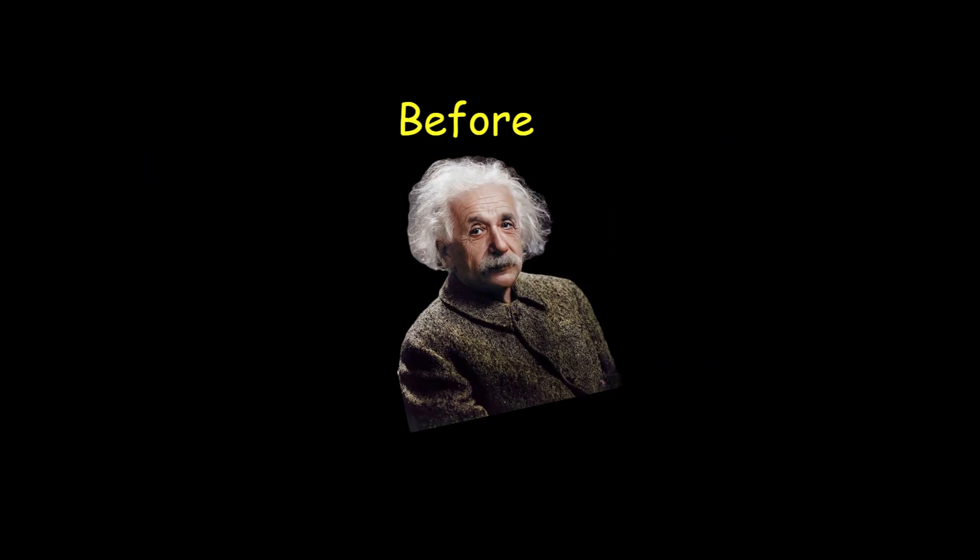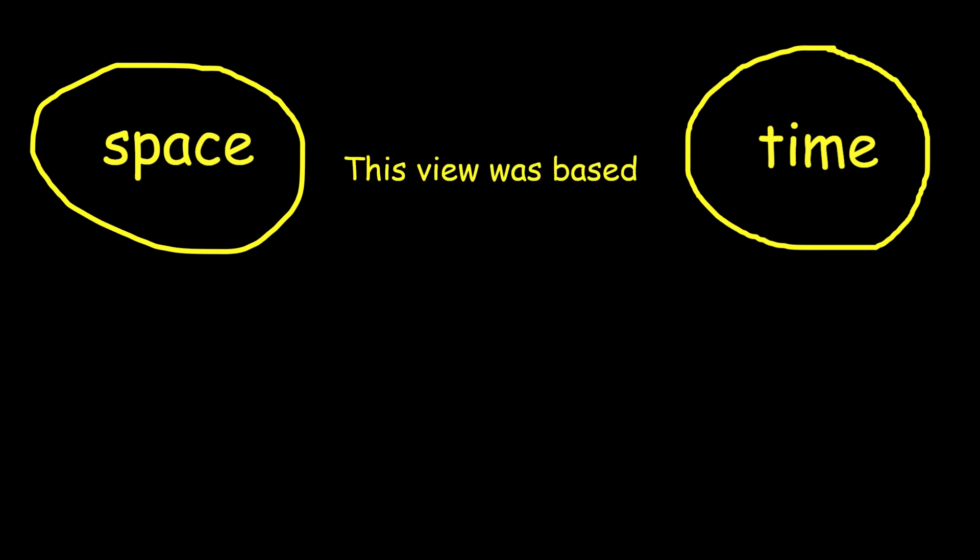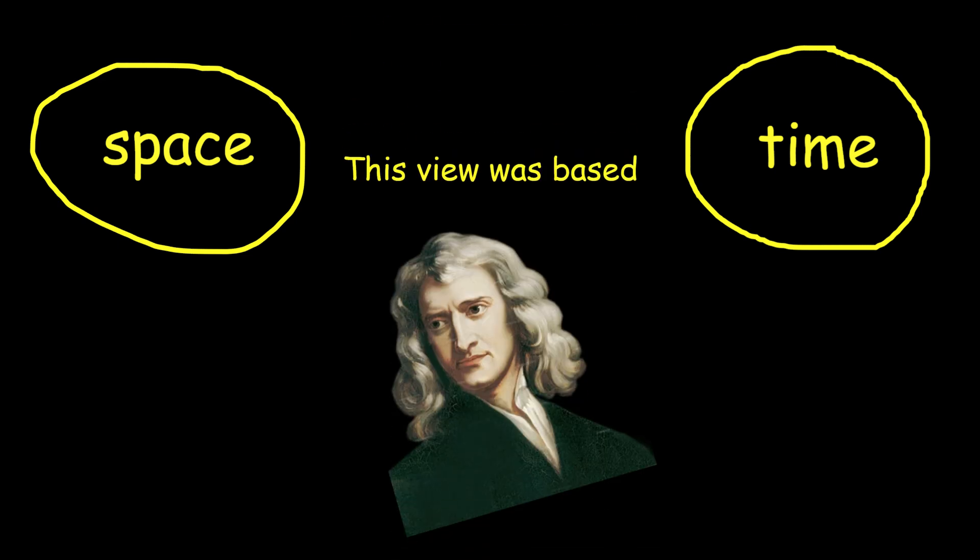Before Einstein, the prevailing view was that space and time were absolute and independent of each other. This view was based on Isaac Newton's laws of motion and gravity.